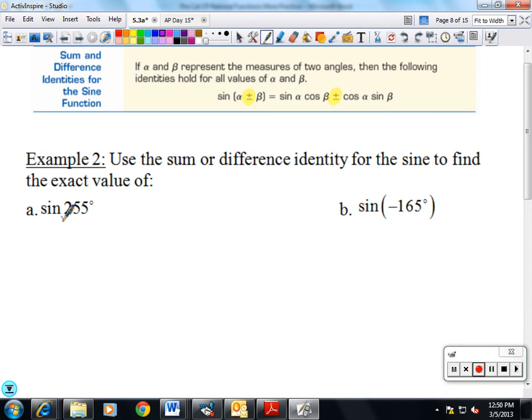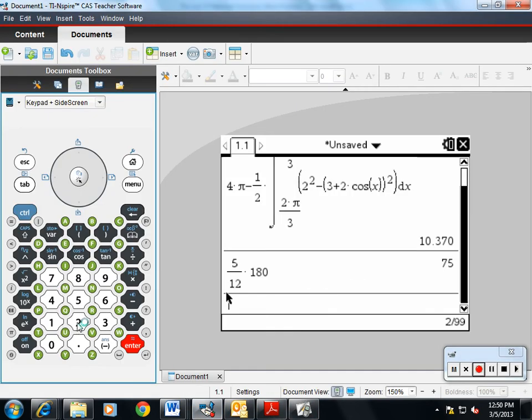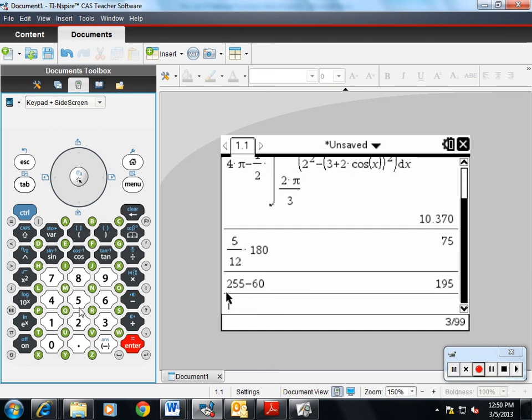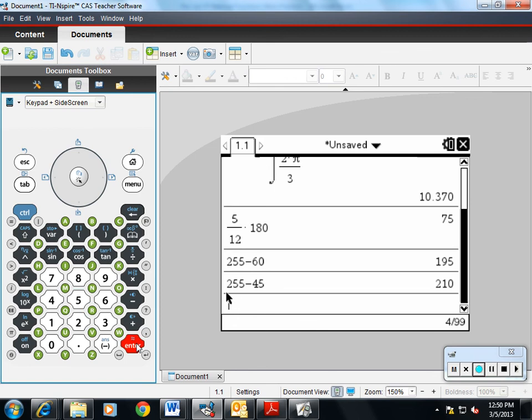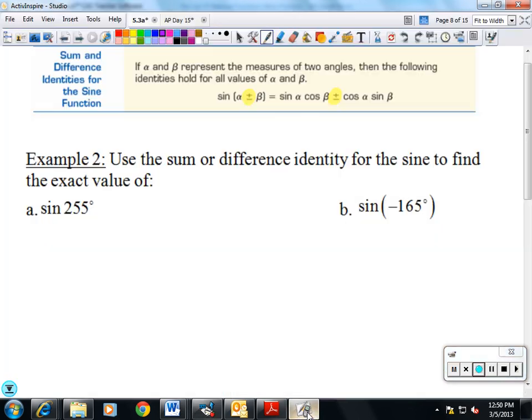255. Two things that will add to give us 255 on my circle. Let's see, 255 minus 60, nope, that didn't help. 255 minus 45, 210. I can do 210 and 45. Sine of 210 plus 45.